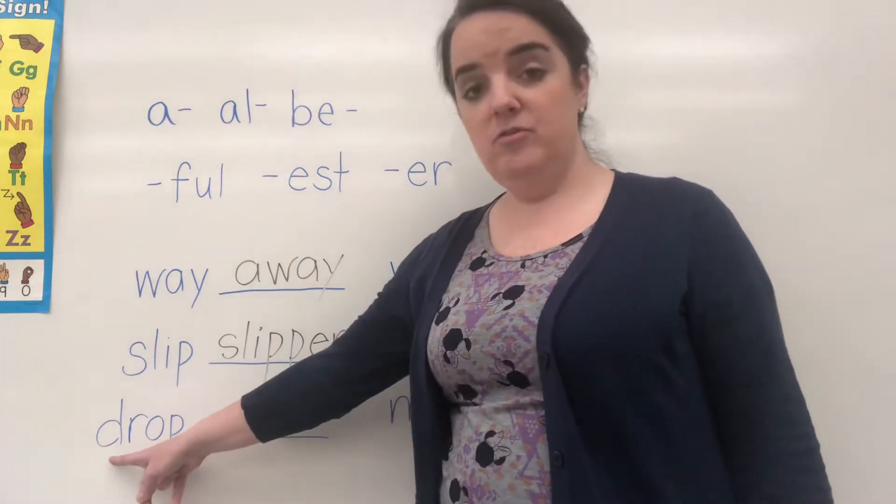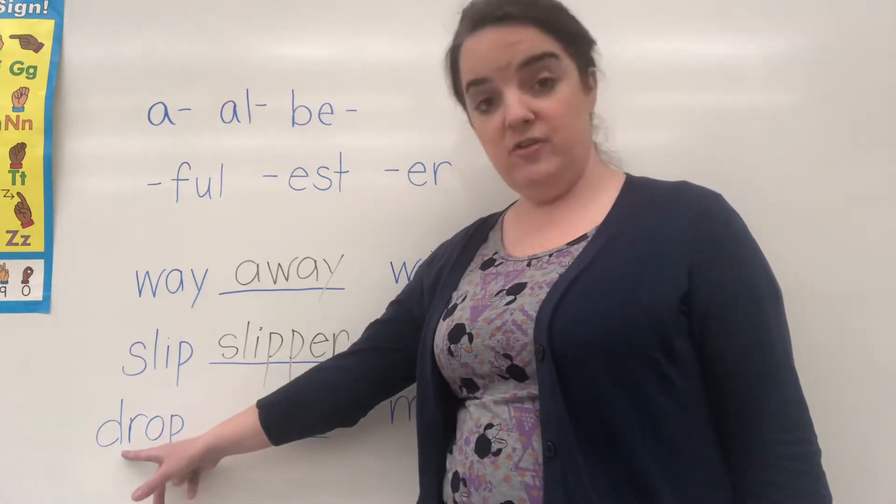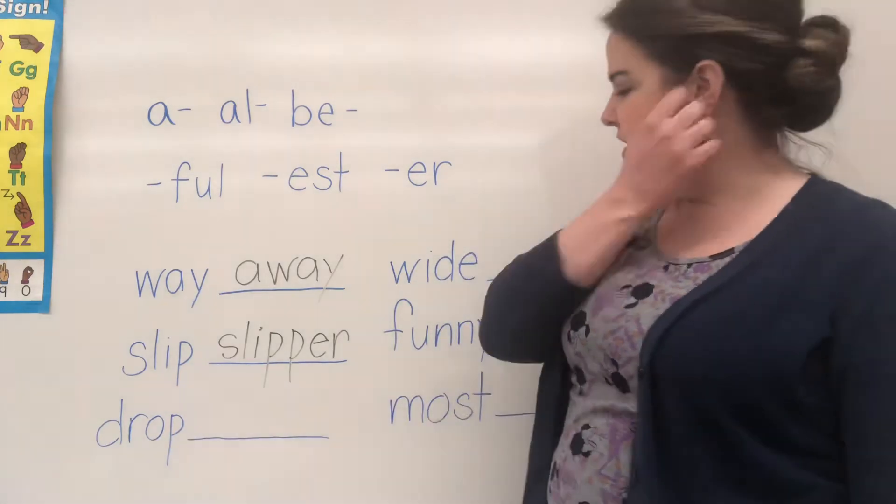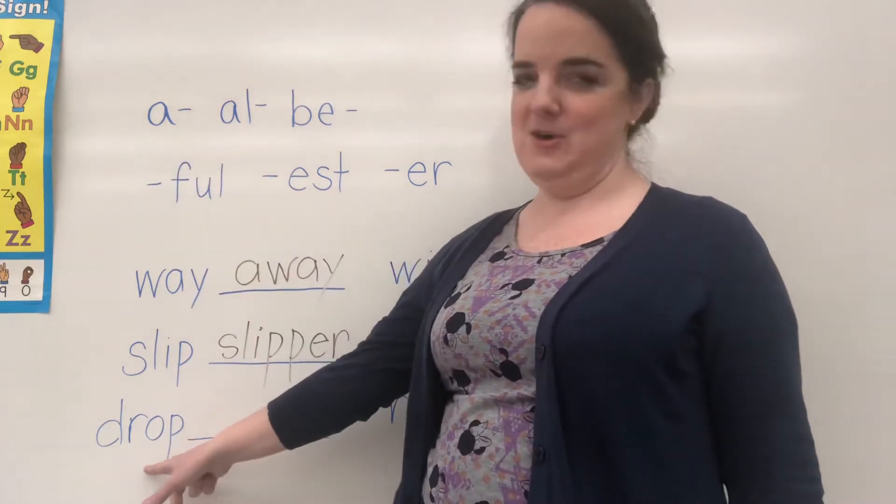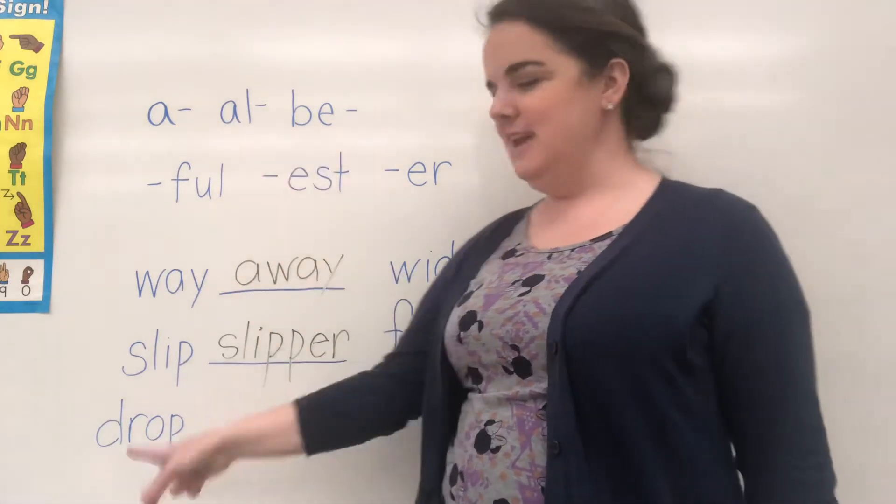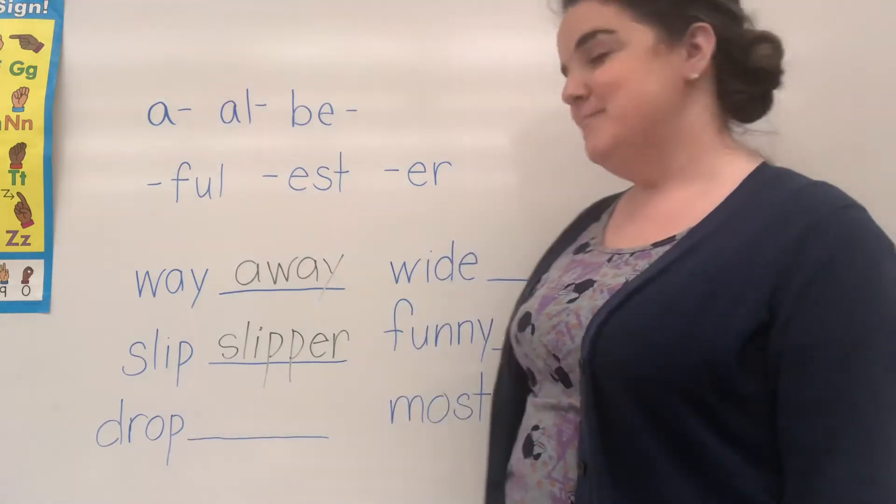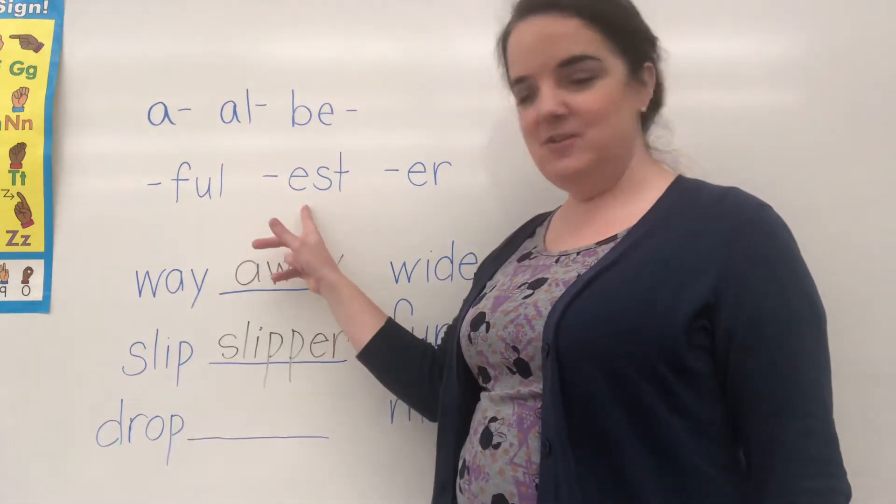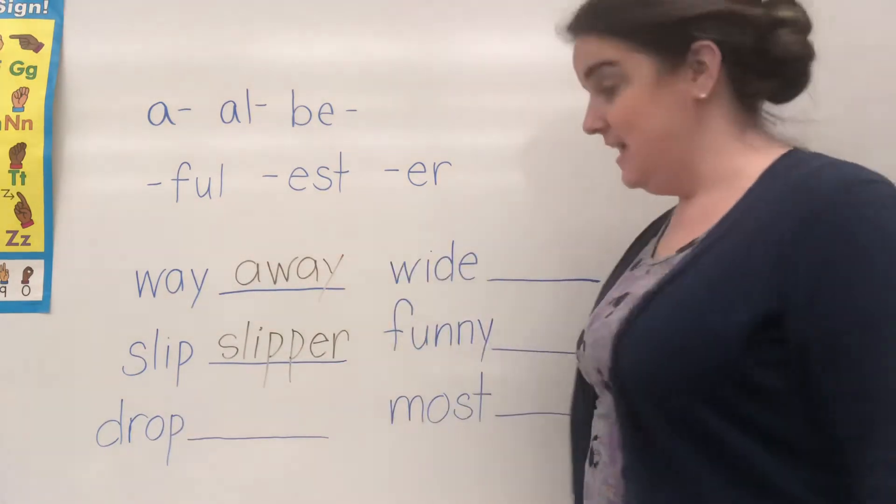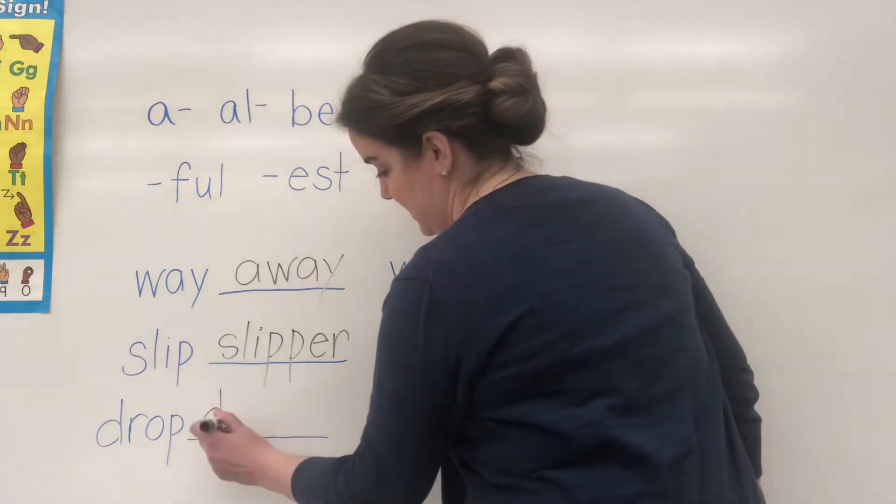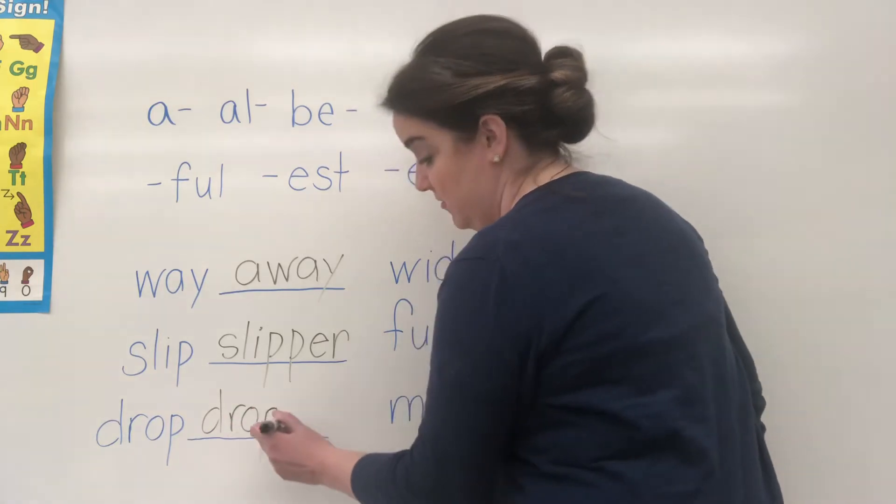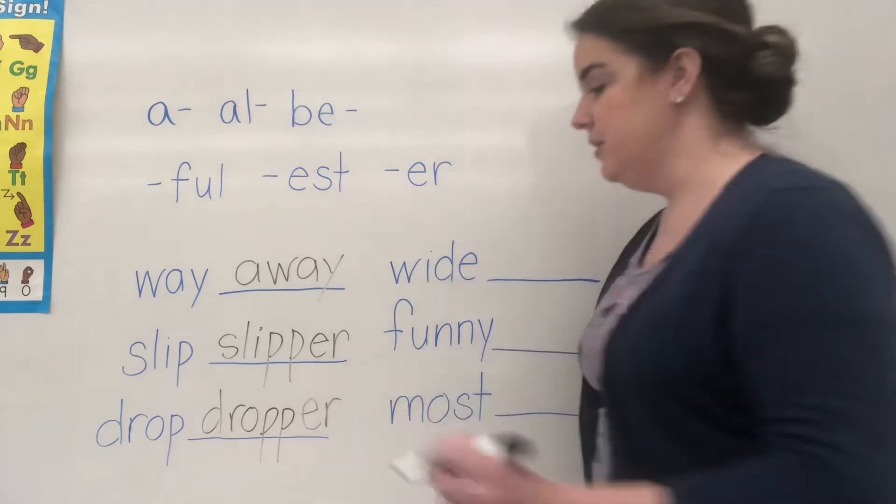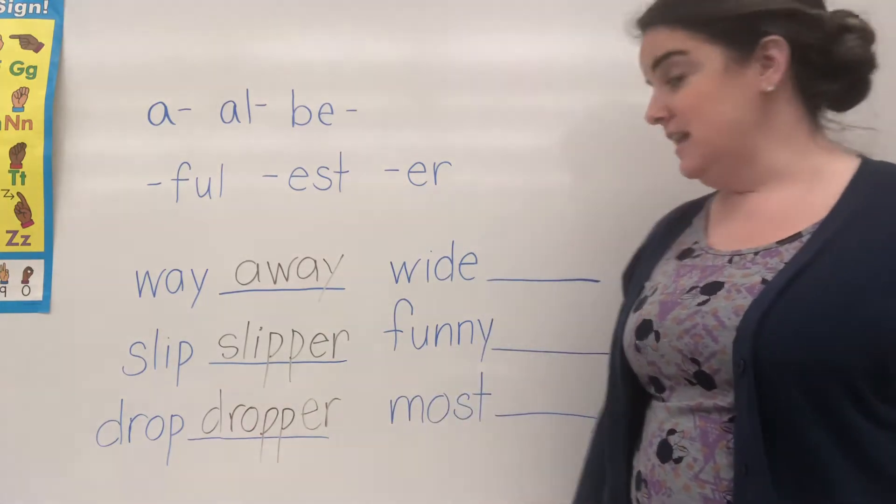Now what about this word? D-R-O-P. Drop. Let's see. A-drop, all-drop, be-drop? These are some funny words, huh? But those are not correct. Drop-ful, drop-est? No. Dropper. Yes. So once again, D-R-O-P. We need to double our consonant and then add our suffix E-R to make our word dropper. Okay, you're getting the idea.